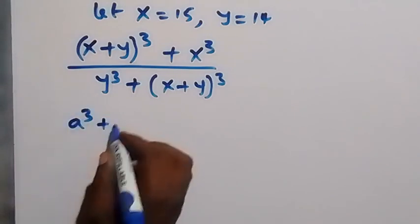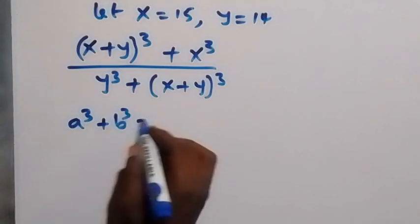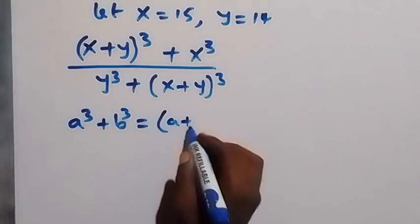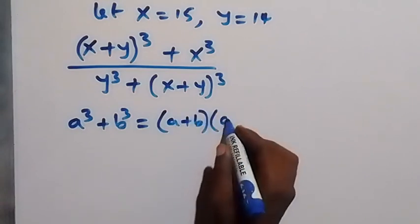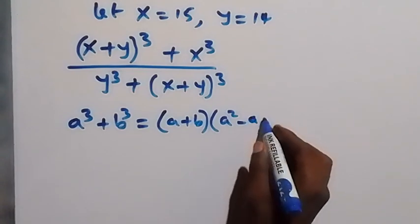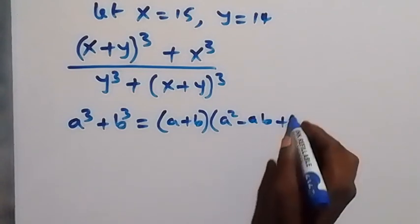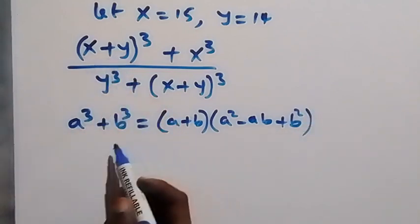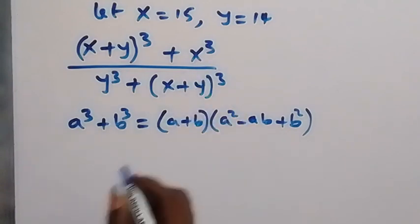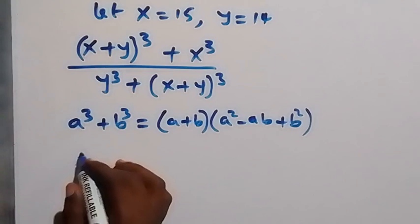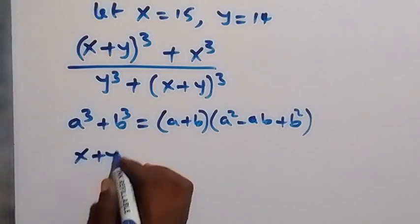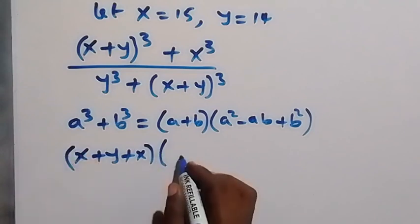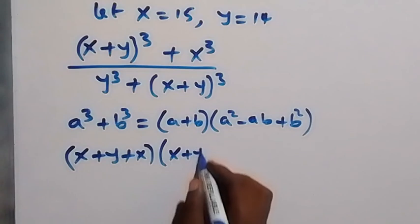We now have the form of a sum of two cubes: a³ plus b³, which can be written as (a plus b) multiplied by (a² minus ab plus b²). Applying that here, (x plus y) serves as a and x serves as b. So the numerator gives us (x plus y) plus x — that's a plus b — then multiplied by (x plus y) squared.